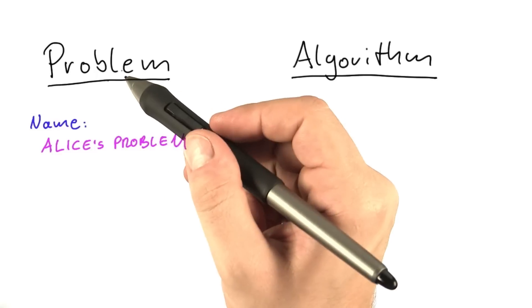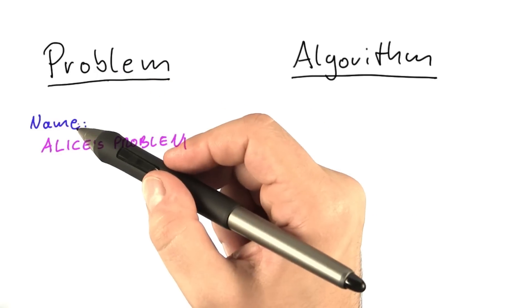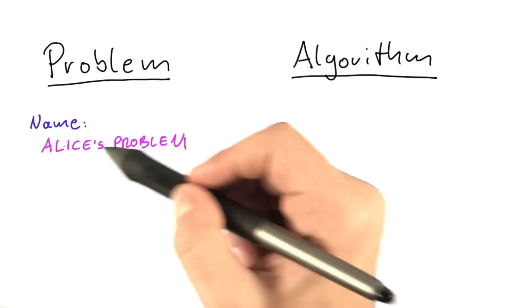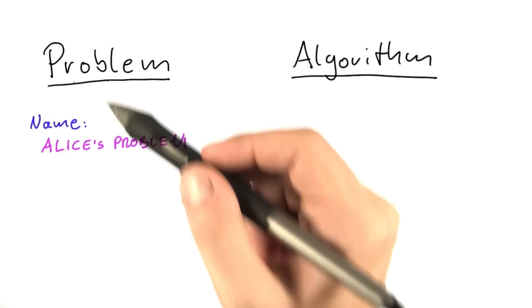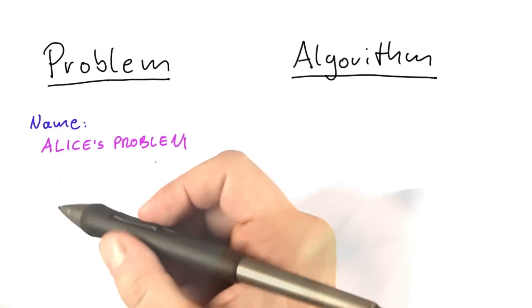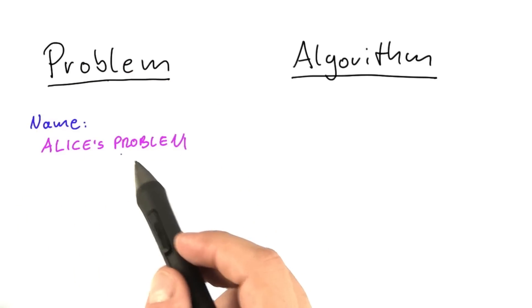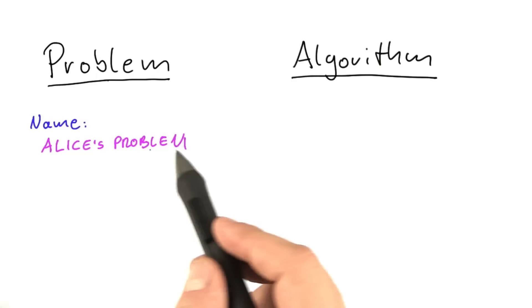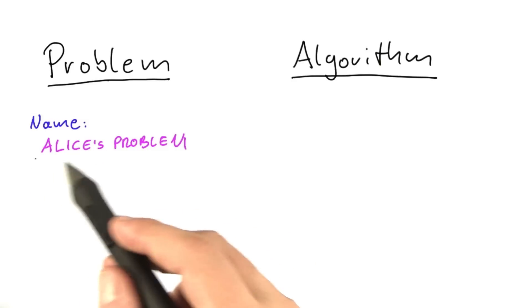A problem normally consists of three parts. The first one is very simple - it's just a name that we give to the problem so that when we talk about it, we know how to reference it. In this case, we'll call the problem that Alice was working on Alice's problem.